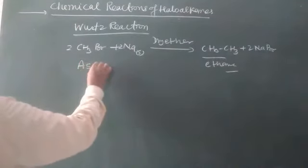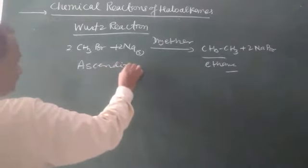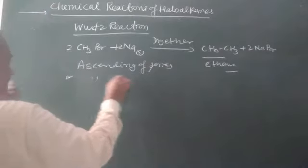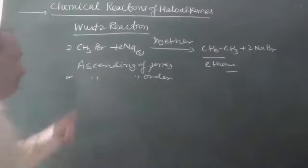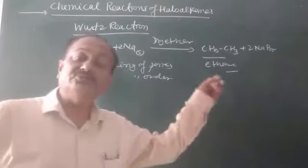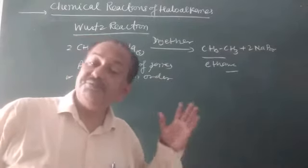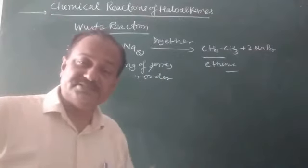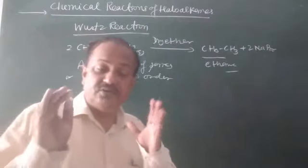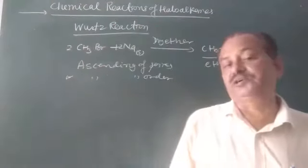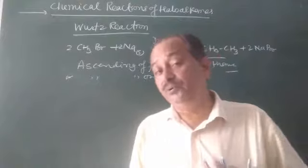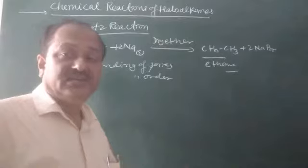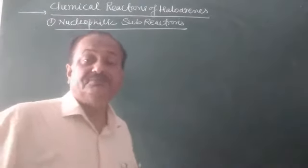This is ascending of series or ascending of order. If 2 moles of CH3Br give ethane, 3 moles give propane, 4 moles give butane, etc. However, when two different haloalkanes with different numbers of carbons are used, a mixture of compounds containing both alkyl groups is formed.